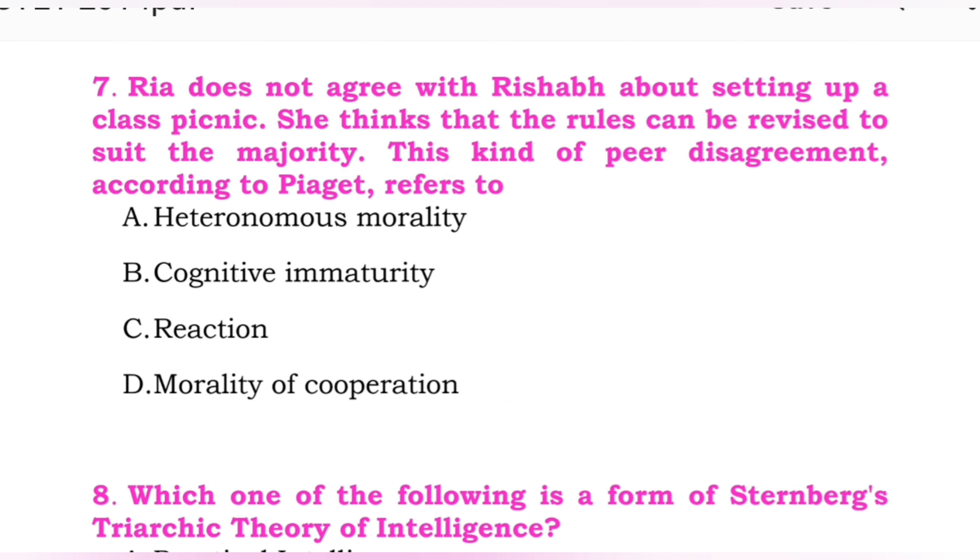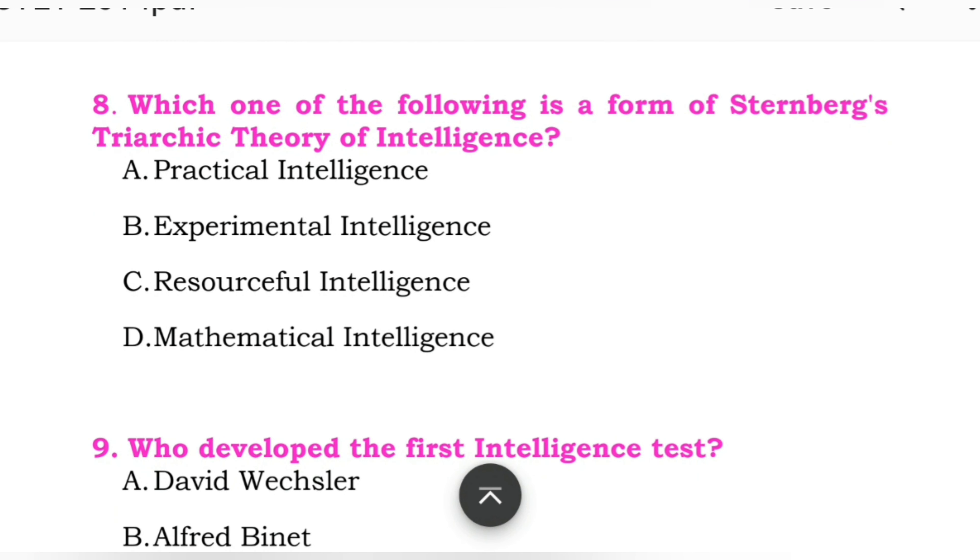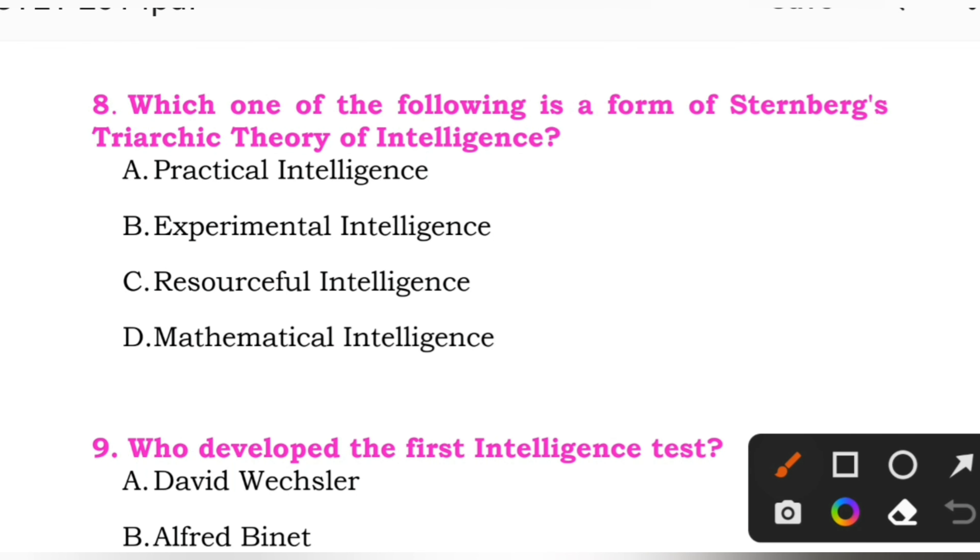Question number eight: Which one of the following is a form of Sternberg's Triarchic theory of intelligence? Options: A: practical intelligence. B: experimental intelligence. C: resourceful intelligence. D: mathematical intelligence. Here the right answer is A, practical intelligence.